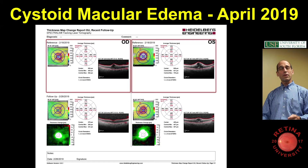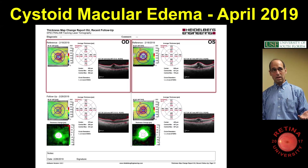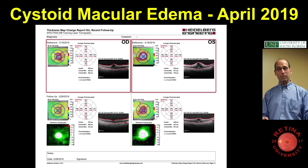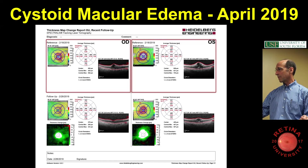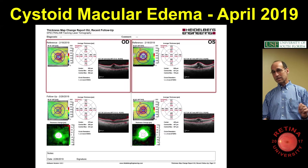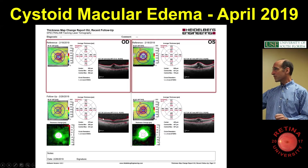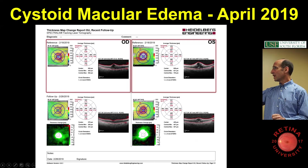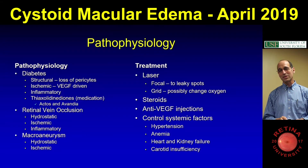This is two weeks after — because on the first visit I don't treat bilaterally; I'll treat bilaterally on subsequent visits. It was interesting because the right eye went totally dry in just two weeks on aflibercept. And then the left eye went pretty dry. I think that's a bilateral contralateral eye effect, which was just interesting.